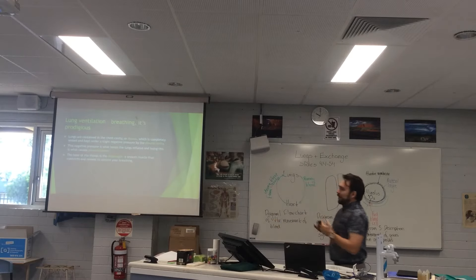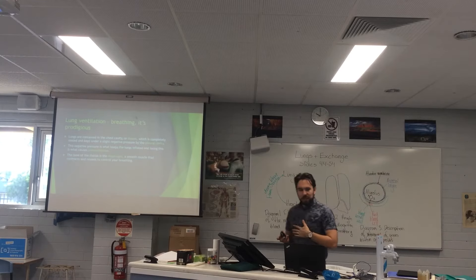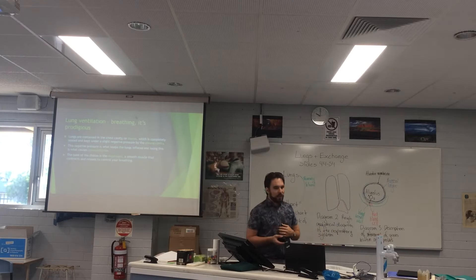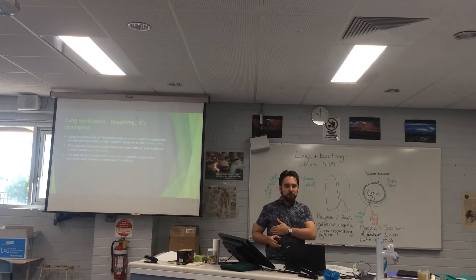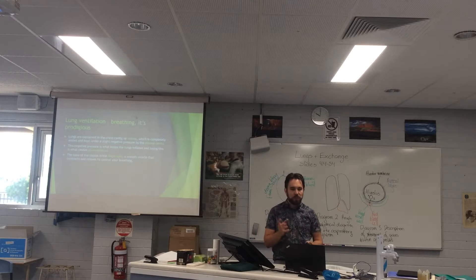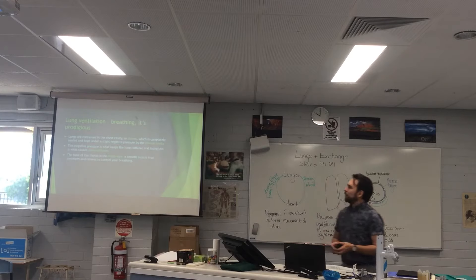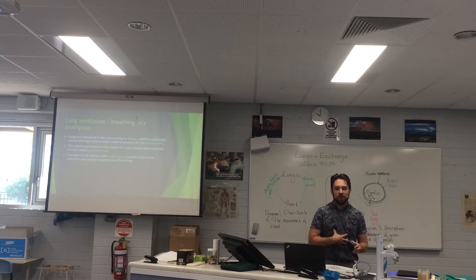Lungs are contained in the chest — the thorax — which is completely sealed and kept under a slight negative pressure by the pleural cavity. It's just a space between our ribcage and our lungs that's filled with very little — essentially a slight vacuum. This negative pressure keeps the lungs inflated, and losing it is what causes a pneumothorax, or collapsed lung.